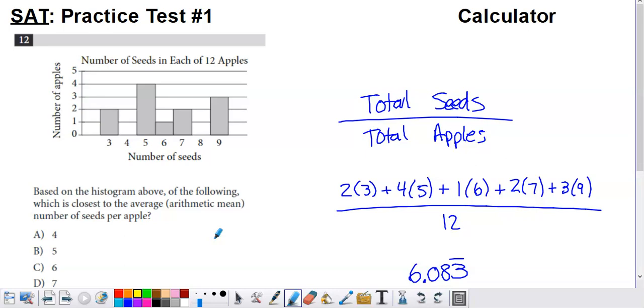So what we're going to have to do in order to figure out the average number of seeds per apple is figure out the total number of seeds in all 12 of the apples and divide by 12. The total number of seeds divided by the 12 apples that we had within the sample, and that's going to give us the average.